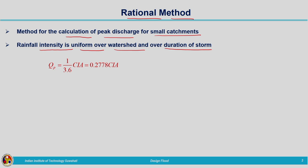In the rational method, we assume rainfall intensity is uniform over the watershed for the duration of the storm. The storm being considered should be of constant value within the duration considered. That is the reason the catchment area should be small — if the catchment area is very large, the rainfall occurring over it will not be uniformly distributed.